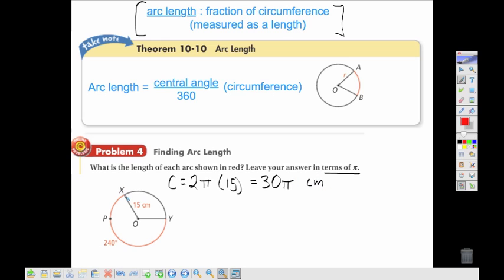The arc length we're looking at is going around from x to p to y. And so to find that, we're looking for arc length. Using our formula, we're going to first look at the fraction of the circle. This is a 240 degree arc out of 360, and we'll multiply that times our circumference, which we just found to be 30 pi.